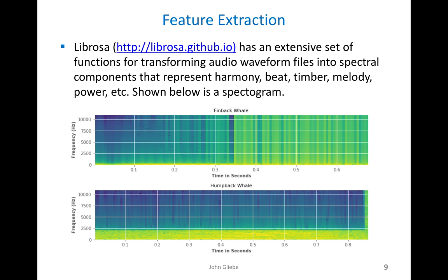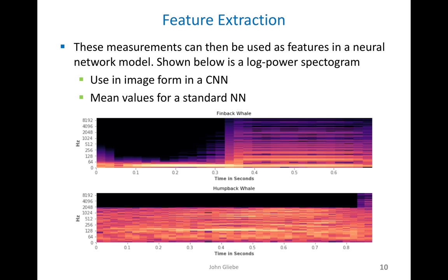The next thing to consider is feature extraction. Librosa has an extensive set of functions for transforming audio waveform files into spectral components. It takes analog waves and turns them into digital representations using fast Fourier transform methods, from which you can develop various measures representing things we know in music as harmony, beat, timbre, and melody, as well as power in decibels. What you see below are spectrograms — one for a finback, one for a humpback whale — and on the next page a log power spectrogram. You can see quite a difference between these two animals, and these measurements can be used as features in a neural network model.